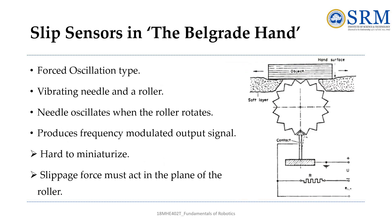The Belgrade hand system is based on forced oscillation, involving a vibrating needle and a roller, as seen in the picture. The needle moves when the roller turns, creating an output signal that changes in frequency. However, making this setup smaller is quite challenging. It is also important that the force causing slippage should act in the same plane as the roller for it to work effectively.